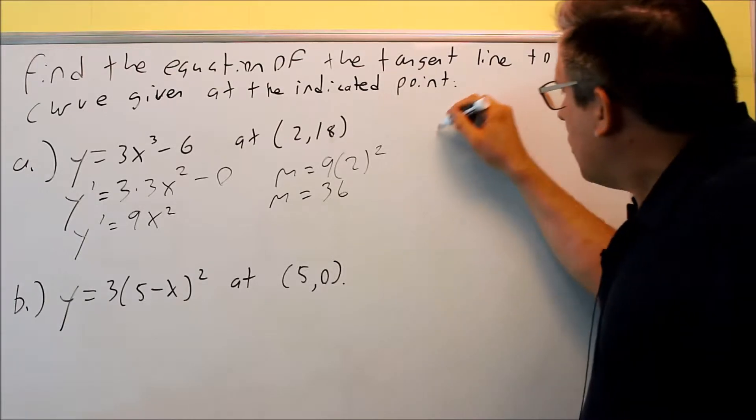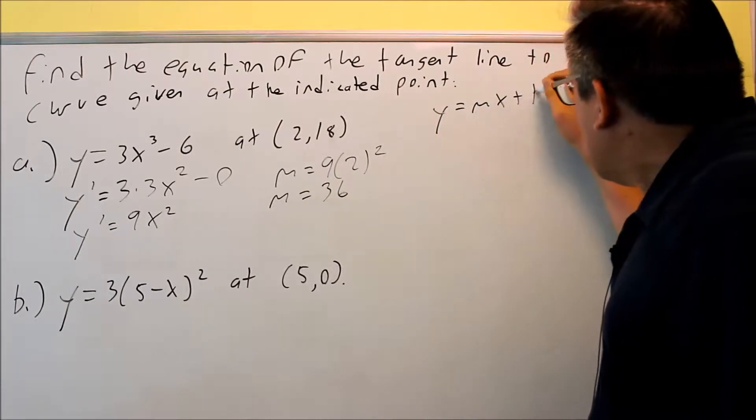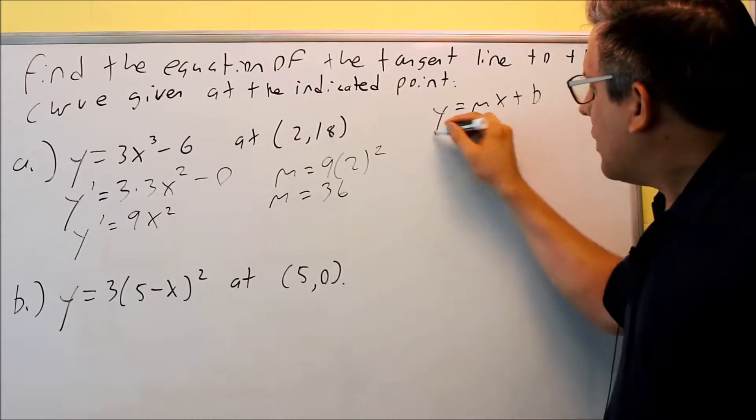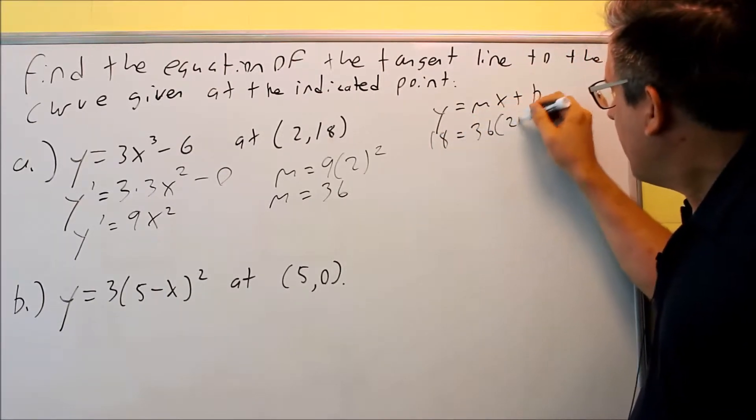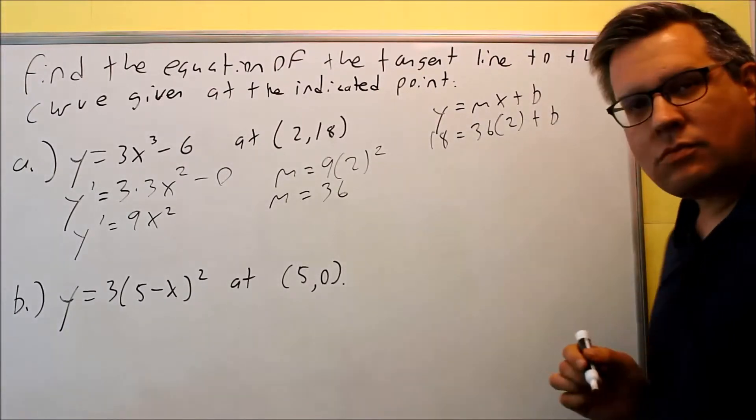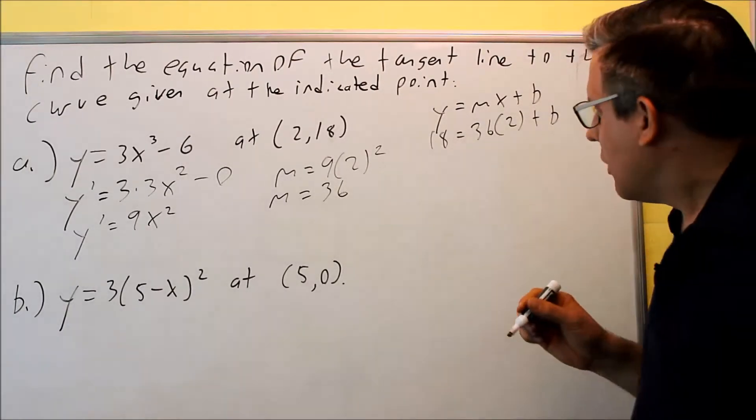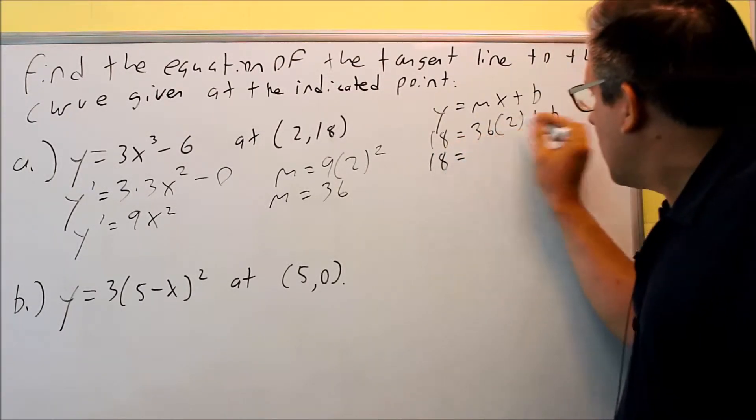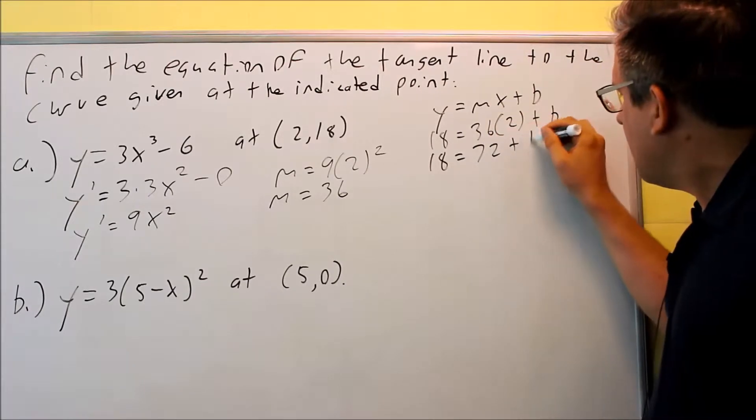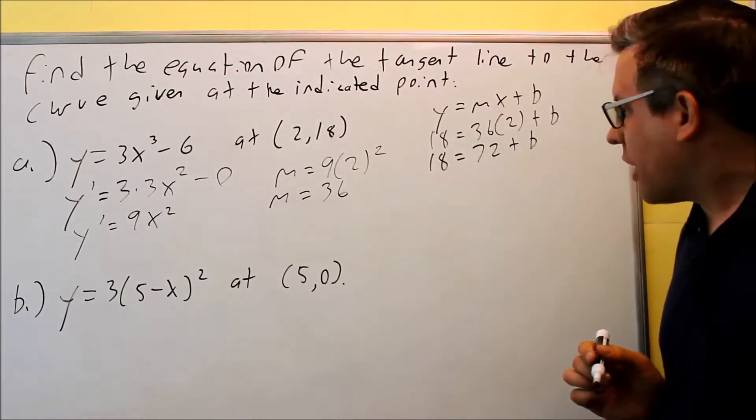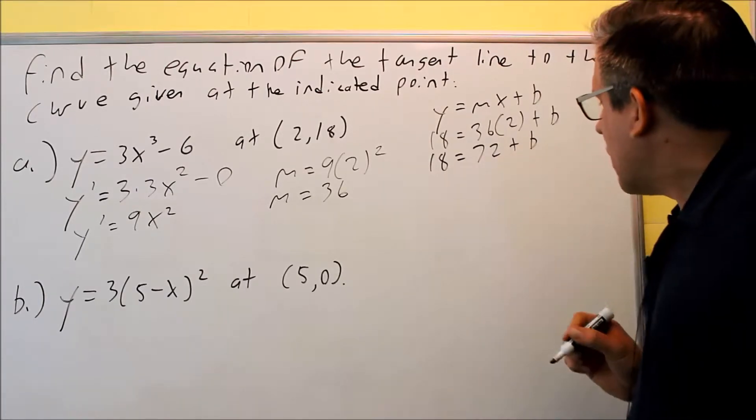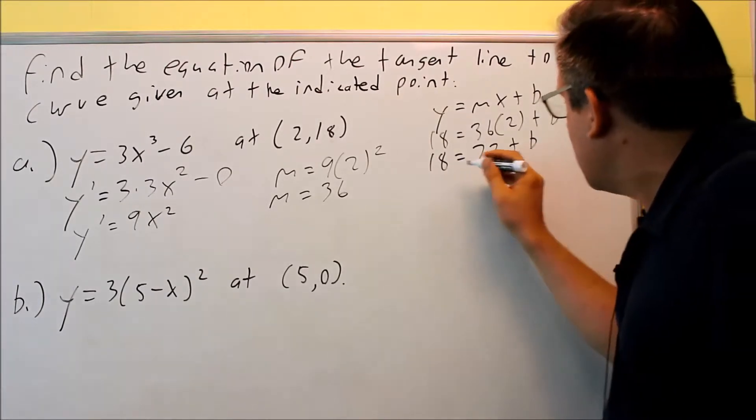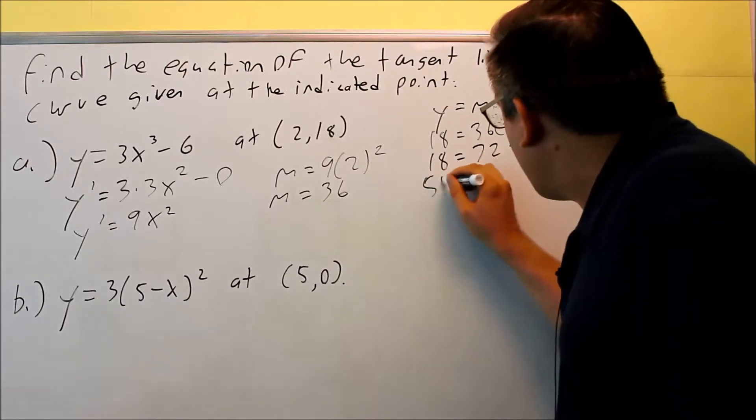Now we're just going to use y equals mx plus b to find the equation. The y is 18, m is 36, and we're just going to solve for b. I have 18, 72 here. We're going to subtract those. And when we subtract this to the other side, you're going to get negative 54.